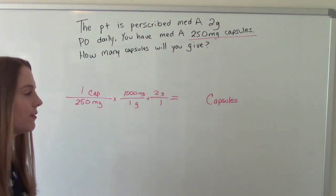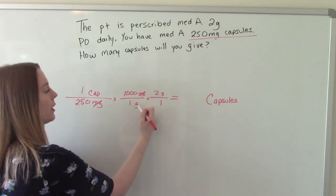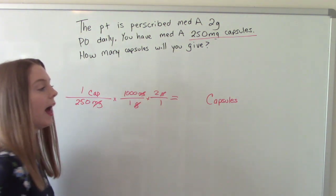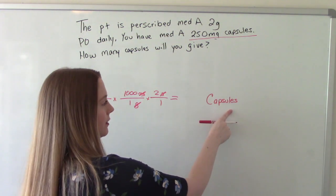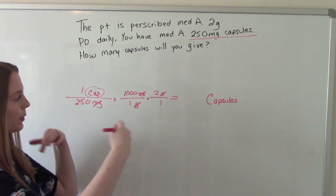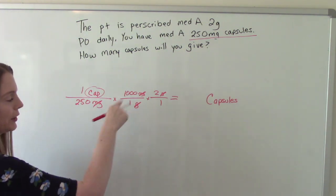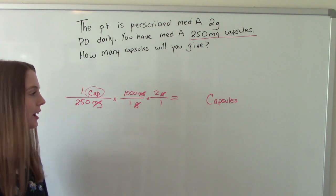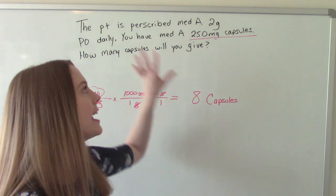Now we can start canceling stuff out. So we'll cancel out milligrams. We'll cancel out grams. And that leaves us with capsules which is what we want. So we had it all set up. We crossed everything out. Now we just got to do the math. So punch it into your calculator or even do it in your head. And it's eight. So eight capsules daily.